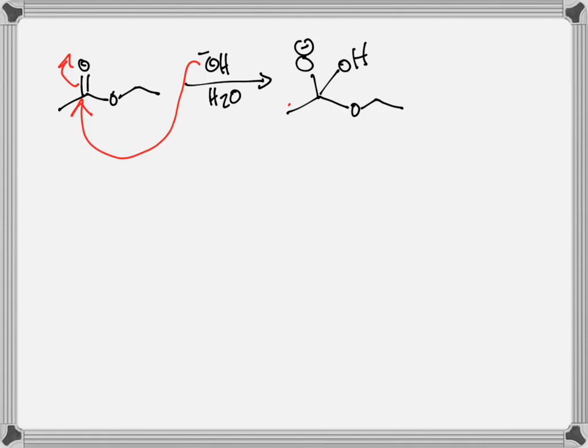So I have a tetrahedral intermediate, the double bond reforms and alkoxide leaves to give us back our sp2 hybridized carbon and we have a carboxylic acid plus an alkoxide.